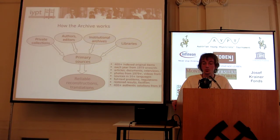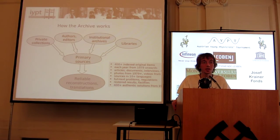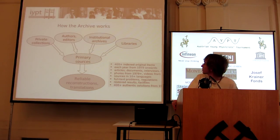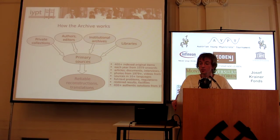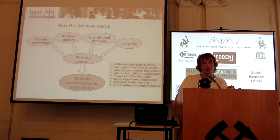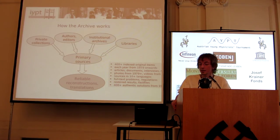So how does the archive work? We collect sources. They come from private collections, from authors, from editors, from institutional archives, sometimes from laboratories. We now have a collection of 400 items covering each year from 1979 onwards — with articles, documents, interviews, photos, videos, in different languages. We can then do reliable reconstructions and translations into English to enhance the historical portfolio of the IYPT and make the history look truly transparent and coherent.